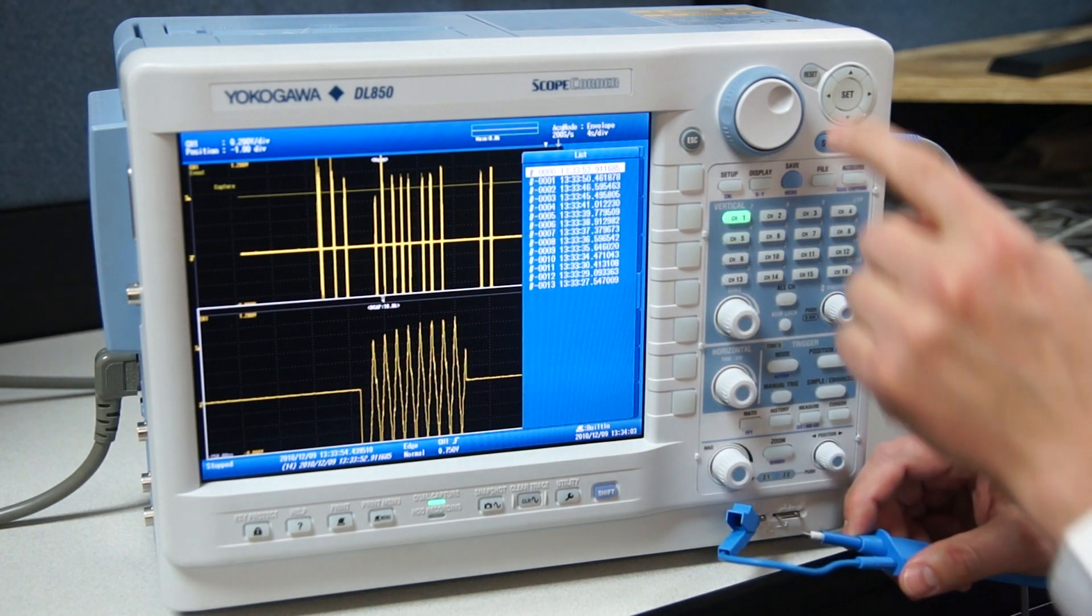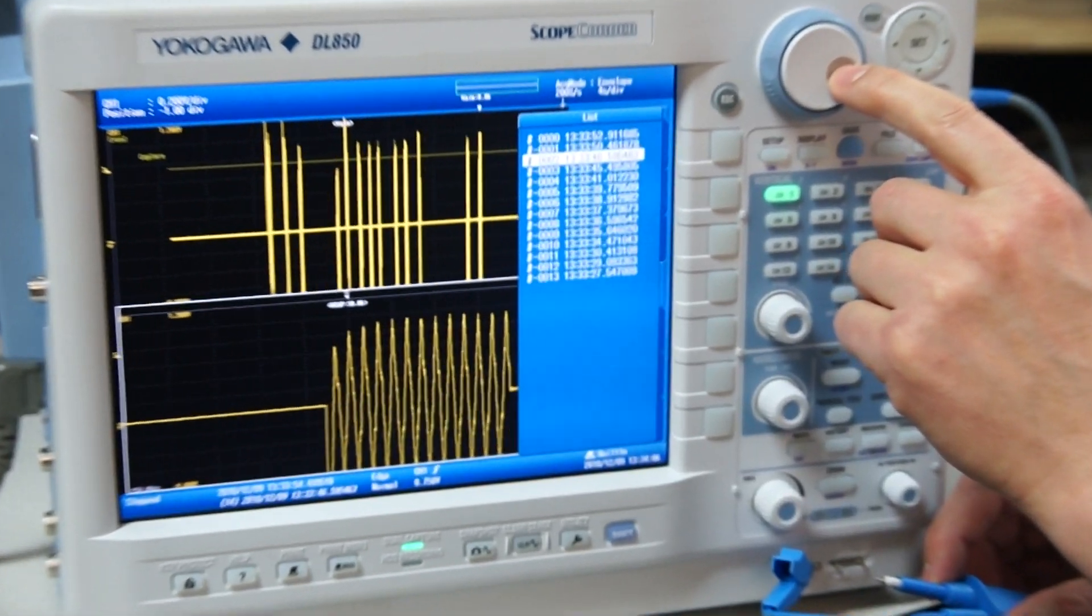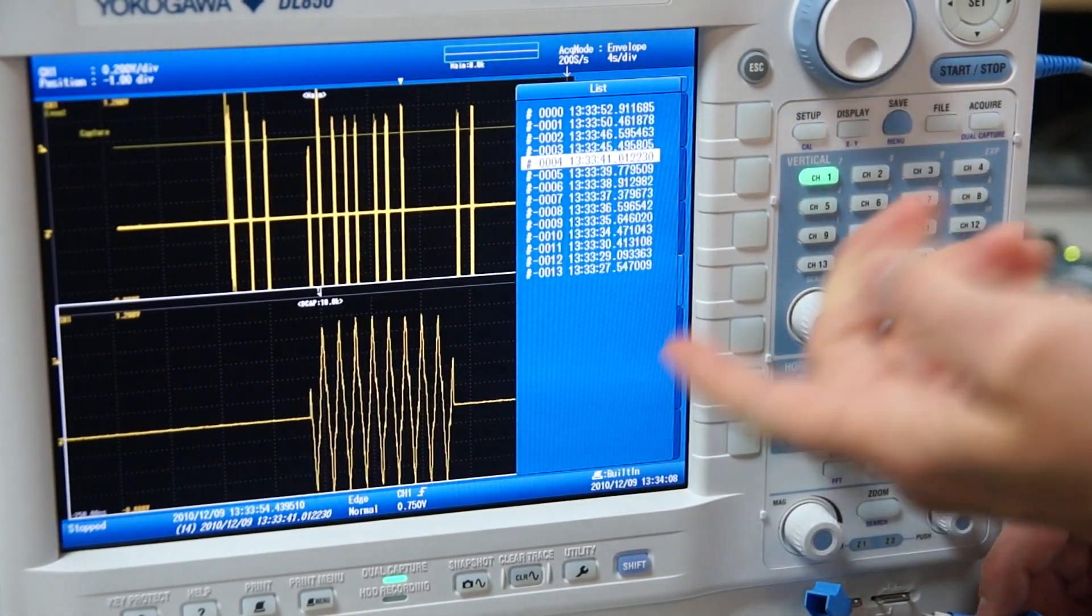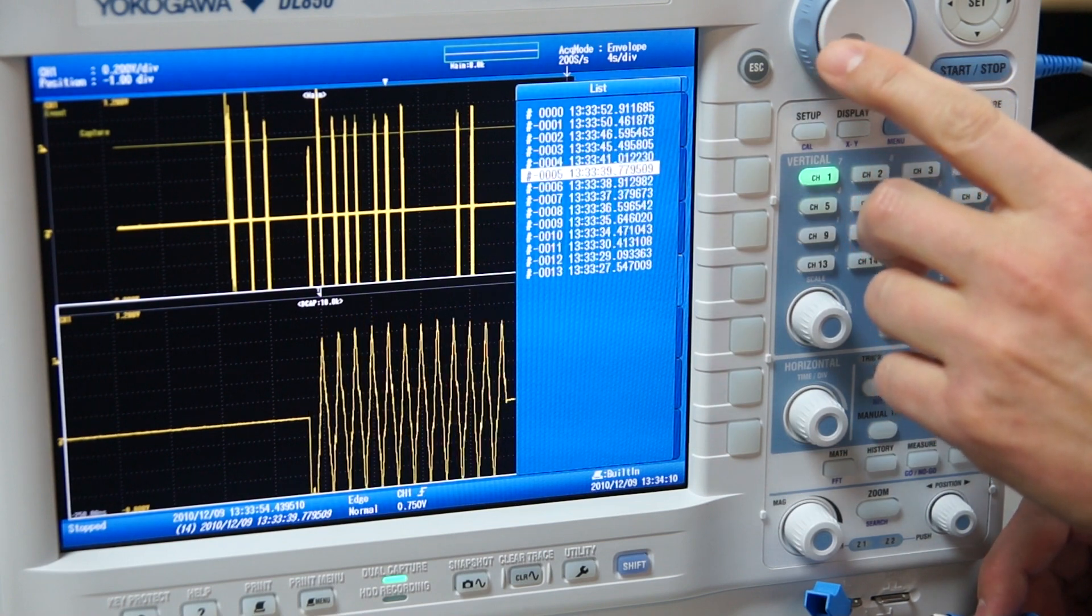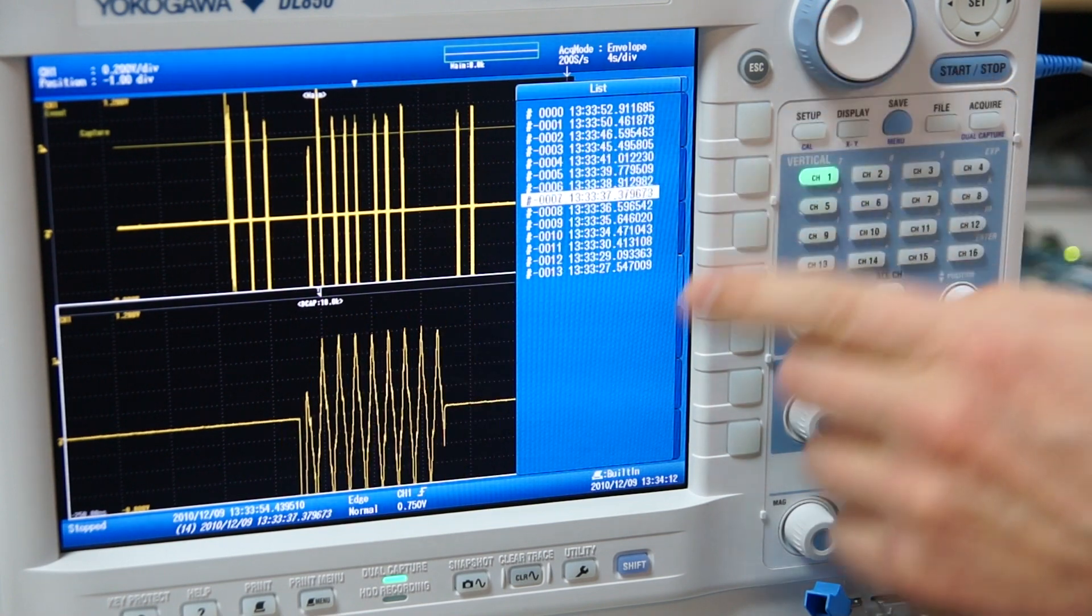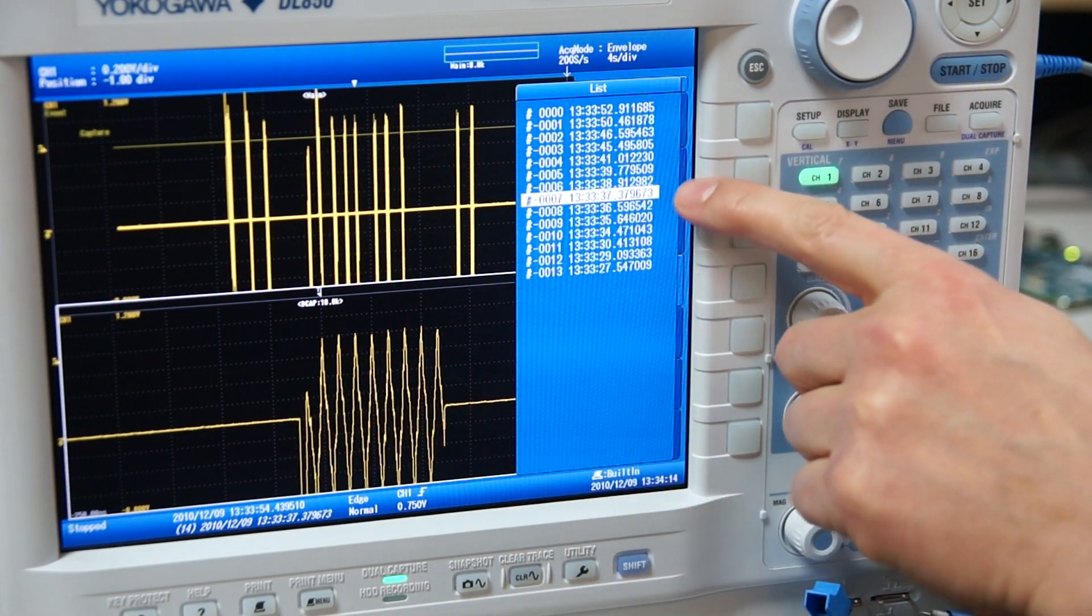You might want to correlate each of those glitches between themselves or with another event. This list gives me the capability to view each event by itself and also gives me a one microsecond time stamp.